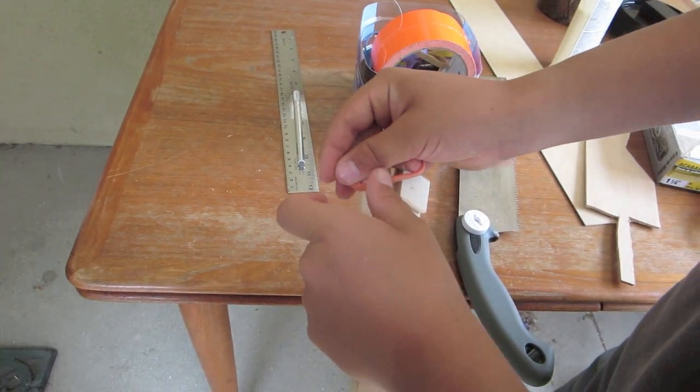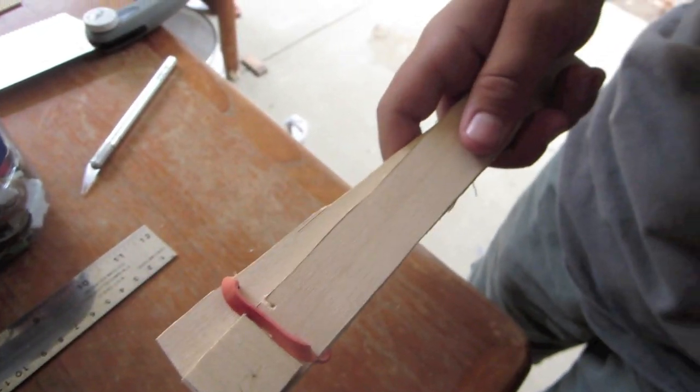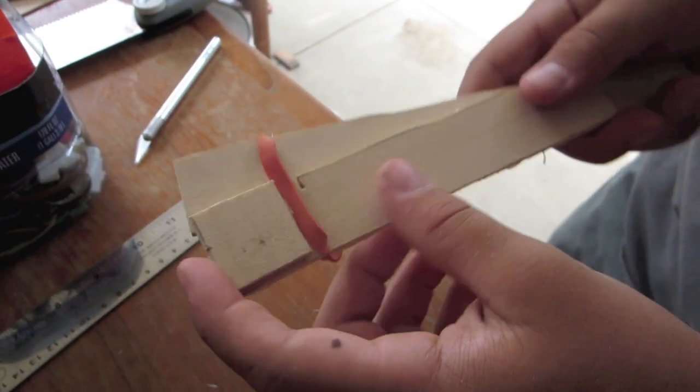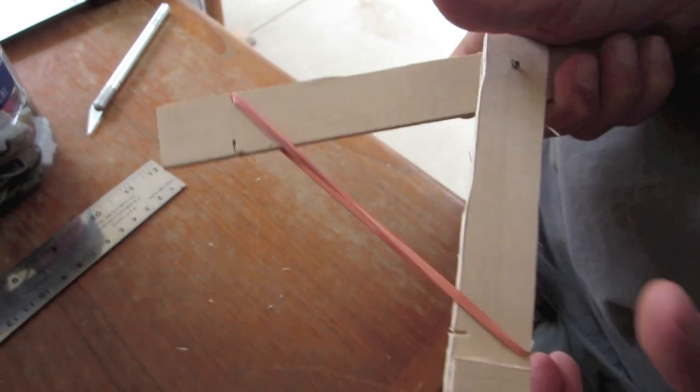Now put the rubber band into the grooves. So I actually cut the grooves on the wrong side so I had to re-cut them. But the rubber band should look like this so the arm can pull back and swing.